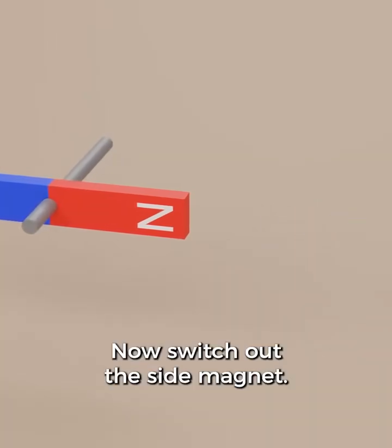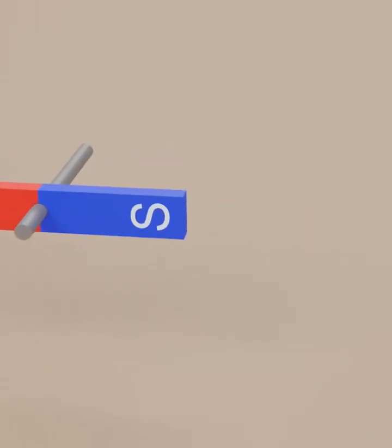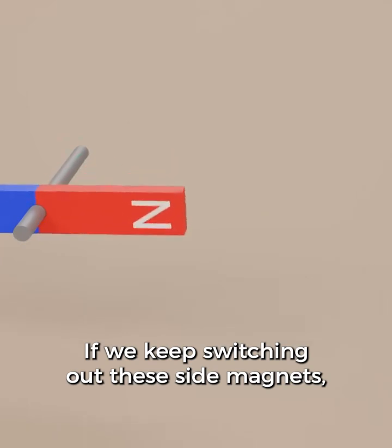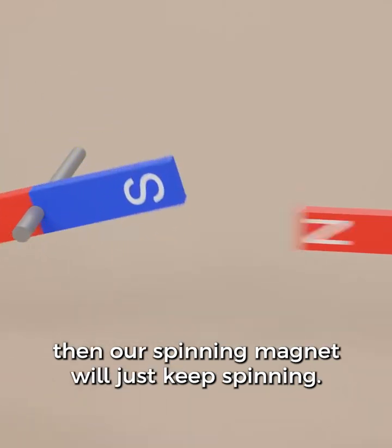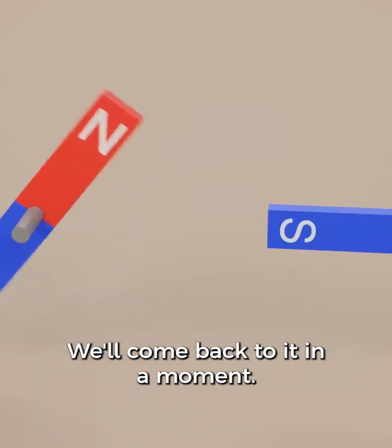Now switch out the side magnet. The same poles repel and opposite poles attract. If we keep switching out these side magnets, then our spinning magnet will just keep spinning. This concept of the spinning magnet is really important. We'll come back to it in a moment.